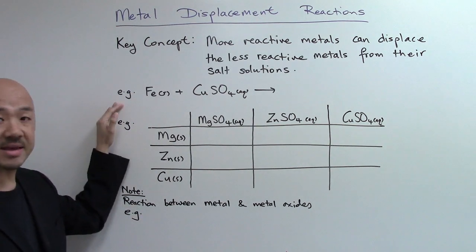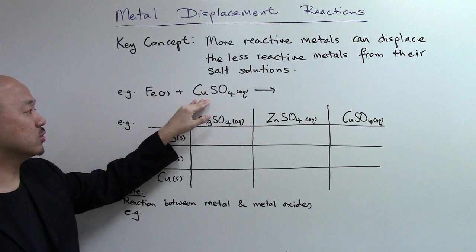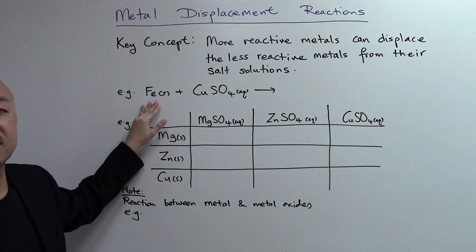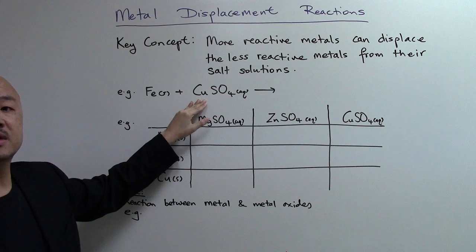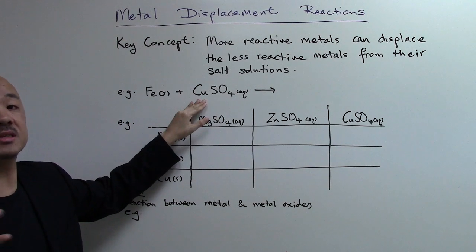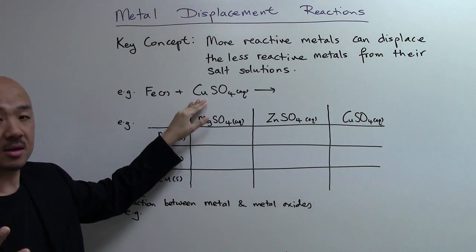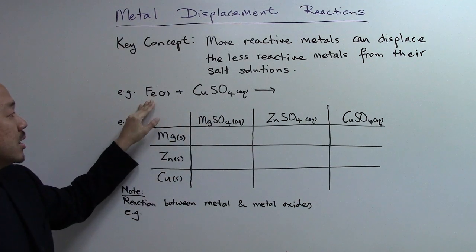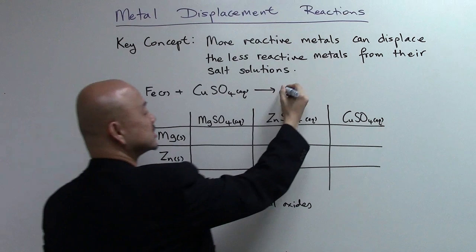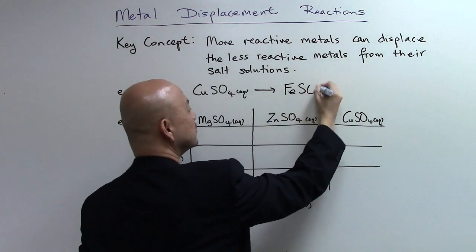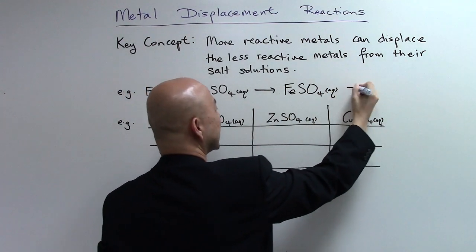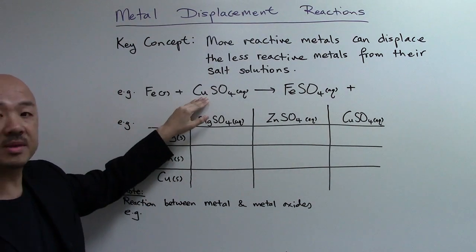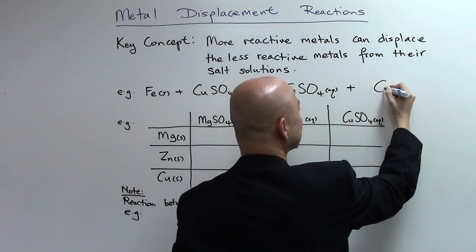I'll give you an example. Iron, when you put it into copper sulfate solution — iron being more reactive than copper — will displace the copper metal out from its copper sulfate solution. So you will then get iron(II) sulfate, FeSO₄, and you will also have your copper being displaced out as a solid.